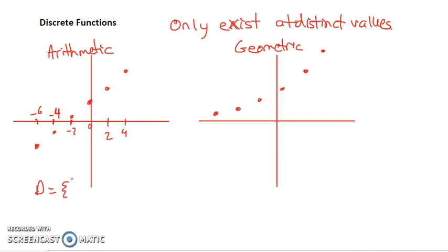What we're going to have here is we're going to have a domain that is only existing from negative 6 to 4 every 2.